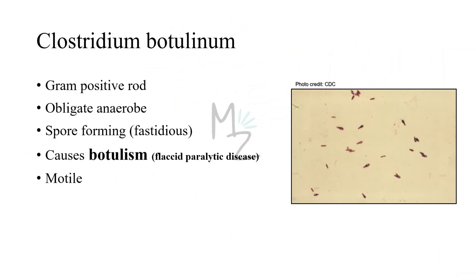Clostridium botulinum is a gram-positive rod. Rods are rectangular and long in shape, as you can see in this picture. Clostridium botulinum is an obligate anaerobe, meaning it can live in the absence of or with very little oxygen. This bacterium is also a fastidious spore former — it forms spores under conditions where it finds survival difficult.